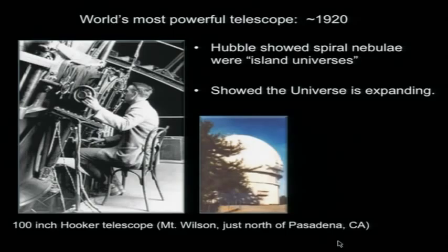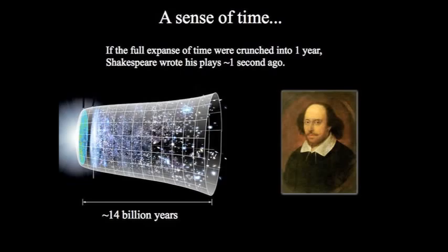There's a theme here: when you have the best instrument around, there's big discovery space of things you can find out. Here's the famous cone of time, which is meant to graphically depict something that's really kind of hard to write down on paper. When you're thinking about astrophysics and cosmology, you have to take into account the fourth dimension of time.